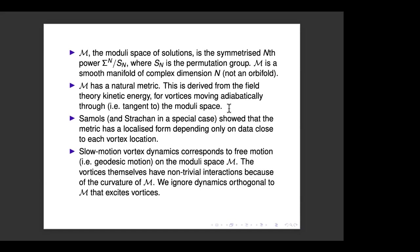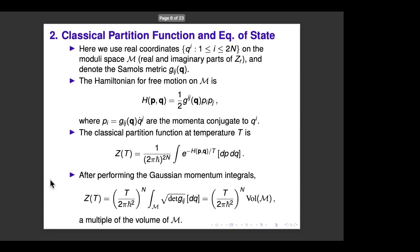Remarkably, things are known about this metric. Trevor Samols — my student a long time ago — and Ian Strachan showed that the metric has a localized form depending only on data close to each vortex location. Close to each vortex there's a linear term, as shown by Martin Speight. Slow-motion vortex dynamics corresponds to geodesic motion on the moduli space — but geodesic motion doesn't mean the vortices aren't interacting. The moduli space is curved, especially where vortices are close together, so vortices scatter off each other even in geodesic dynamics.